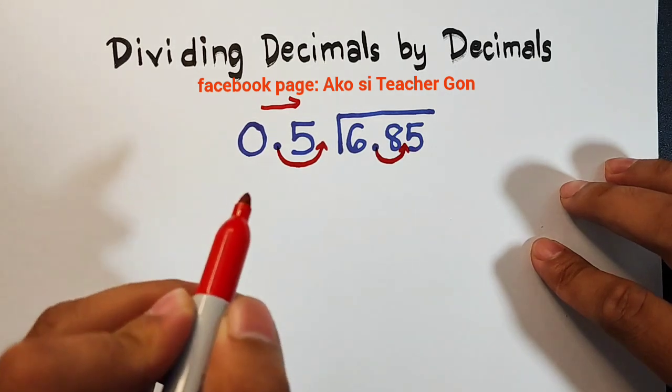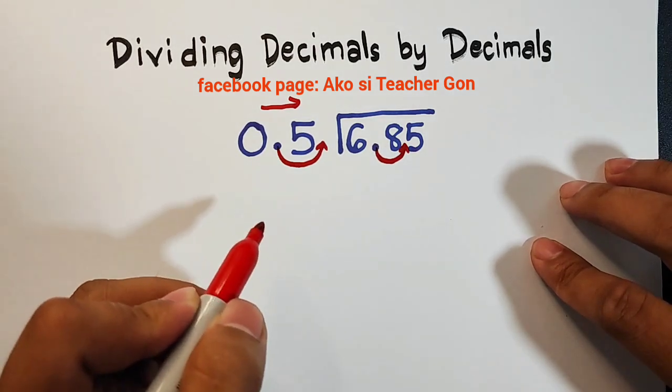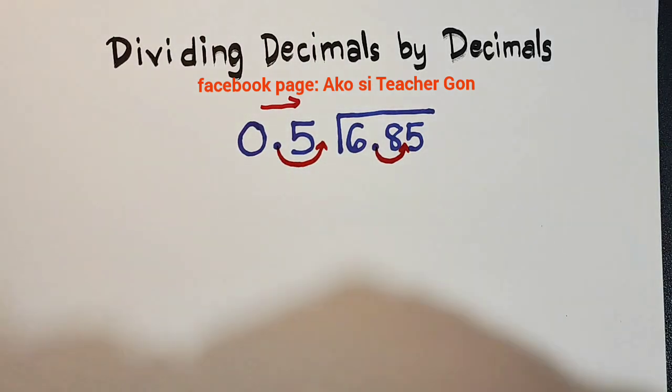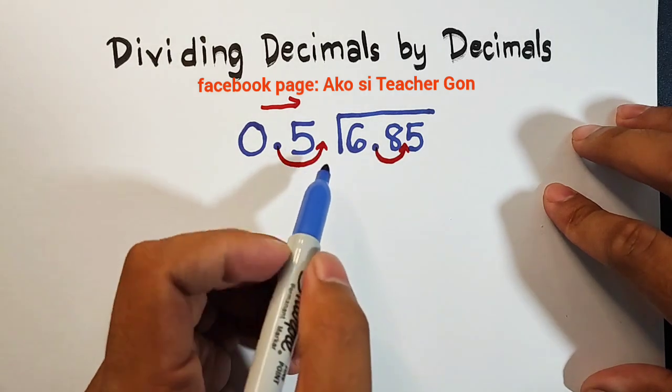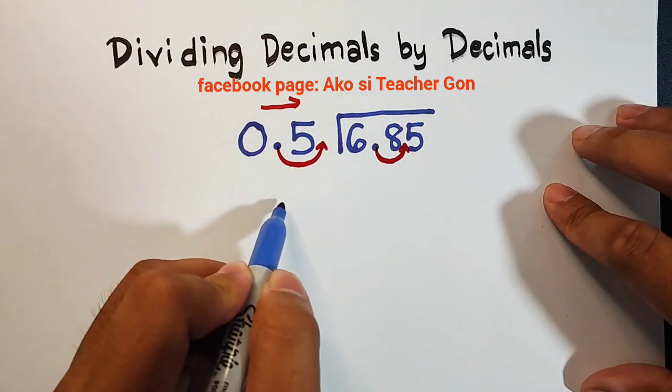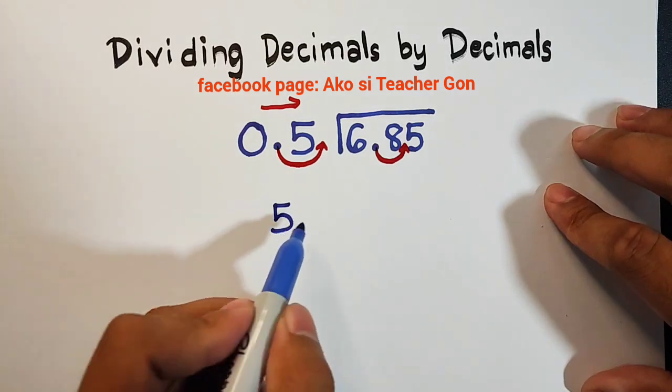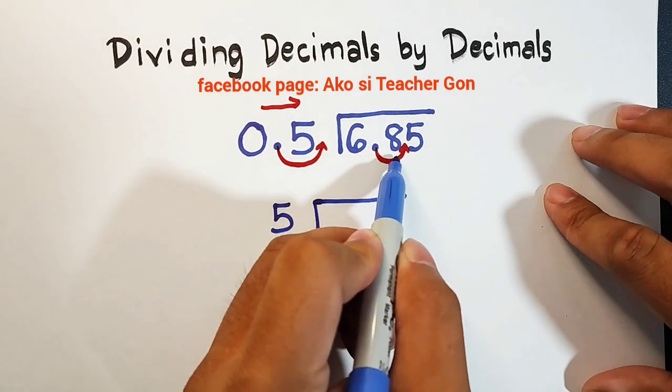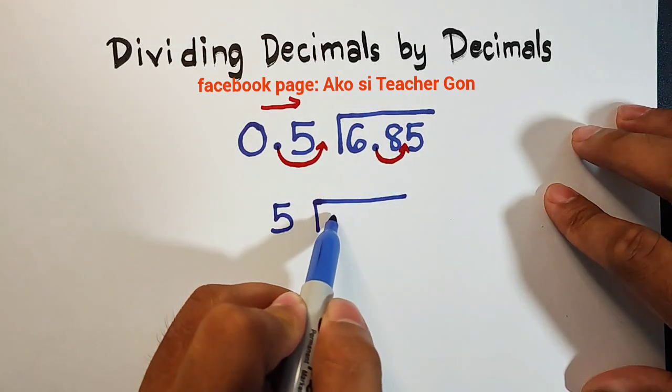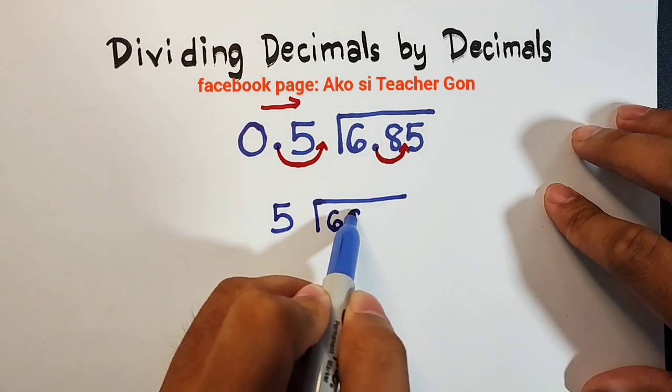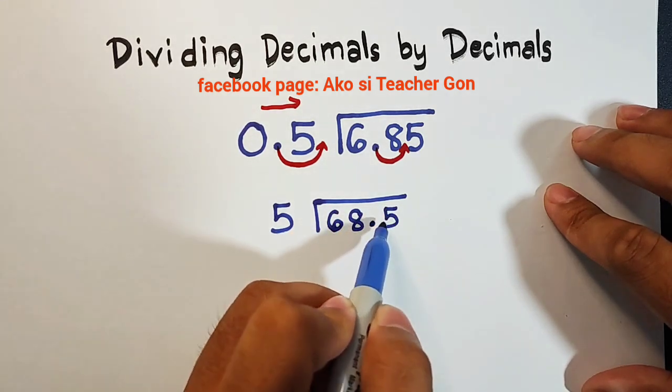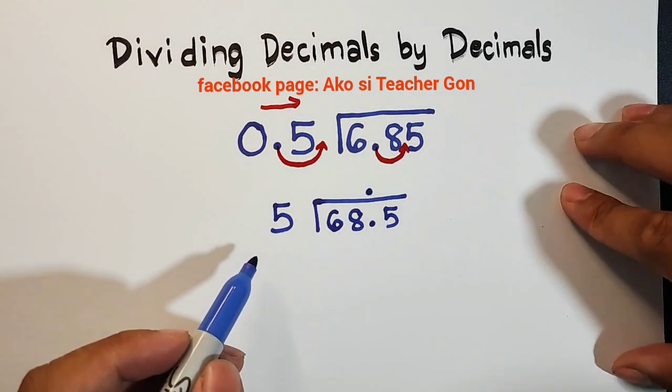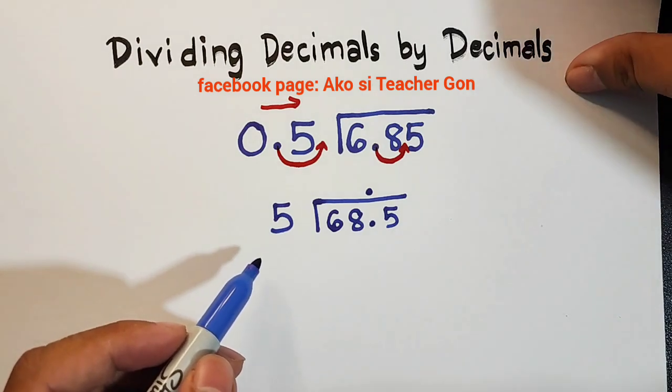We need to rewrite our new divisor and dividend. Instead of 0.5, after moving your decimal value or place, it will become a whole number of 5. And as for your dividend, after moving one decimal point or value from left to right, it will become 68.5. So you will copy your decimal point here and let's start dividing these decimals.